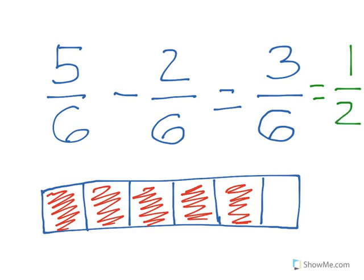Now if we look at our area model, you can see that I divided the area model into 6 pieces. That's our denominator. We had 5 sixths, so I shaded in 5 sections red. And what I'm going to do to illustrate this is from that 5 sections, I'm just going to cross out 2 of them. And then you can see that after I take away those 2, we have 3 sixths left.